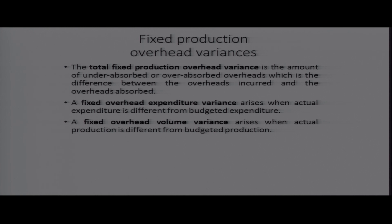The total fixed overheads production variance is the amount of unabsorbed or over-absorbed overheads — the difference between overheads incurred and overheads absorbed. The fixed overhead expenditure variance arises when actual expenditure differs from budgeted expenditure. The fixed overheads volume variance arises when actual production is different from budgeted production.